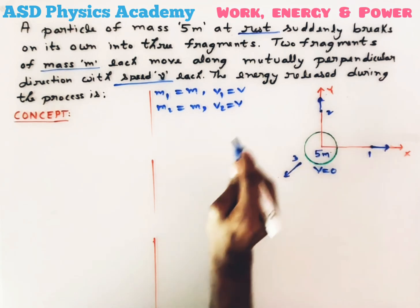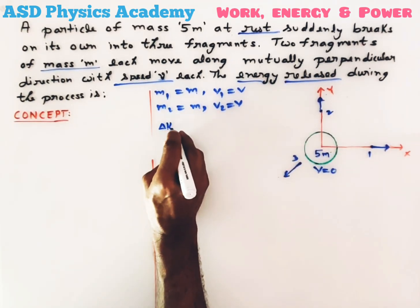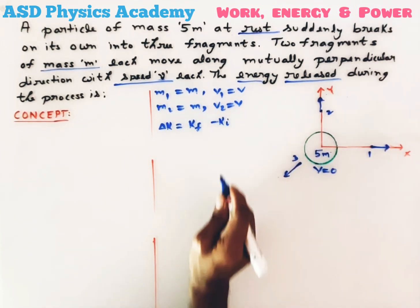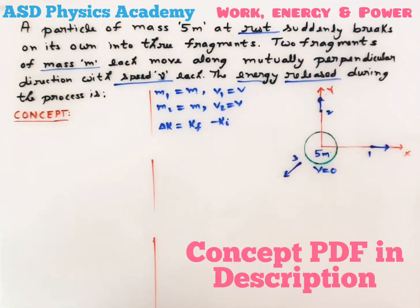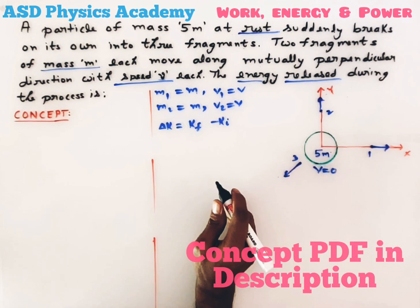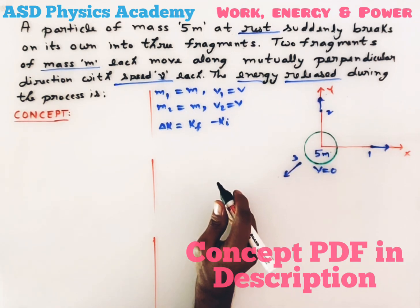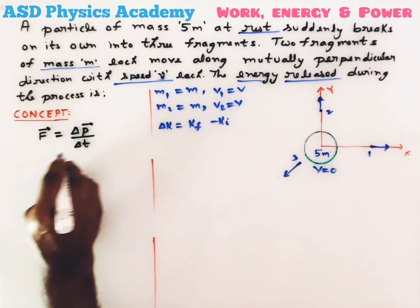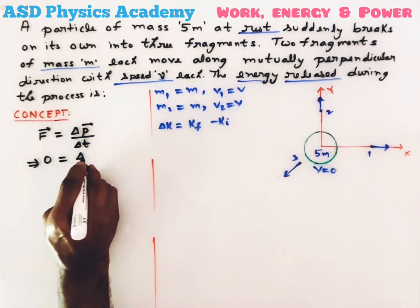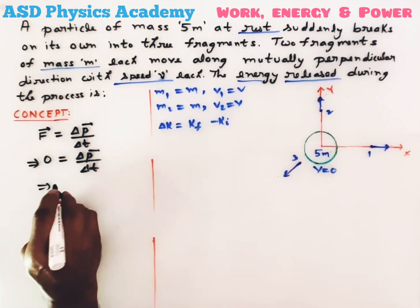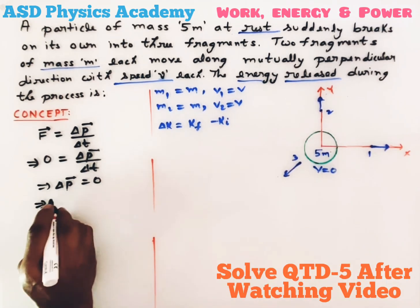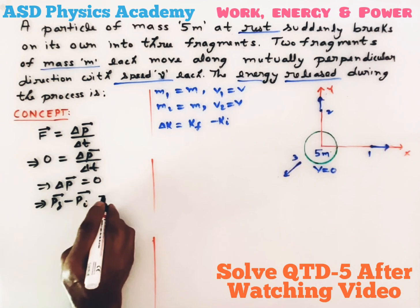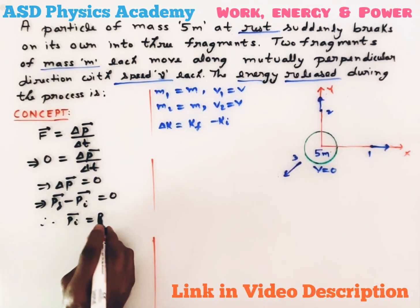The energy released is given by the change in kinetic energy before and after the explosion. The key concept is: whenever any particle breaks or any bomb explodes, the linear momentum of the system is conserved — linear momentum before explosion equals linear momentum after explosion. From Newton's second law, applied external force equals the rate of change of linear momentum, so in the absence of external force: 0 = ΔP/Δt, which gives ΔP = 0, meaning final momentum equals initial momentum.